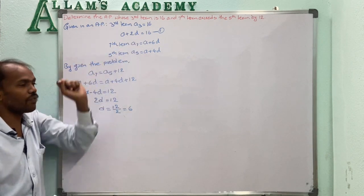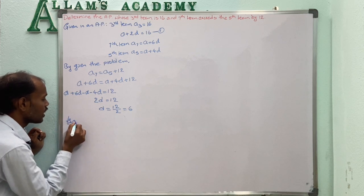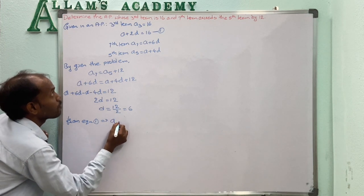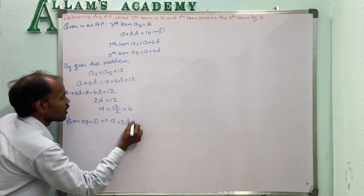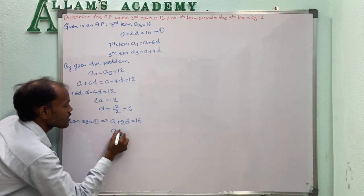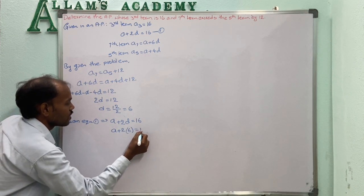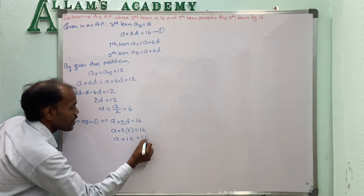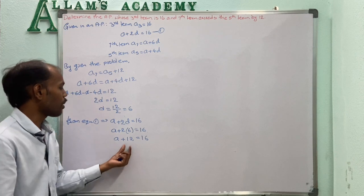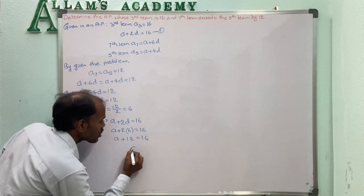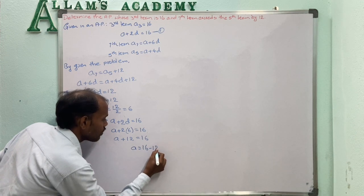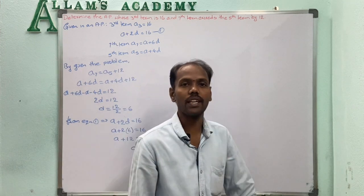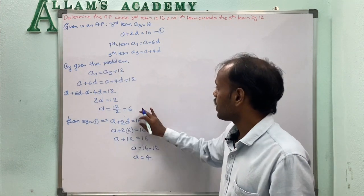Substituting D = 6 into the first equation A + 2D = 16: A + 12 = 16. Transferring 12 to the other side: A = 16 - 12 = 4. The first term of the AP is 4 and the common difference is 6.